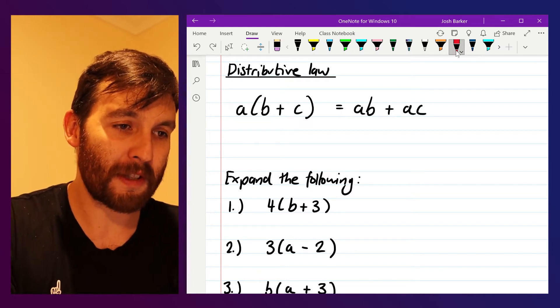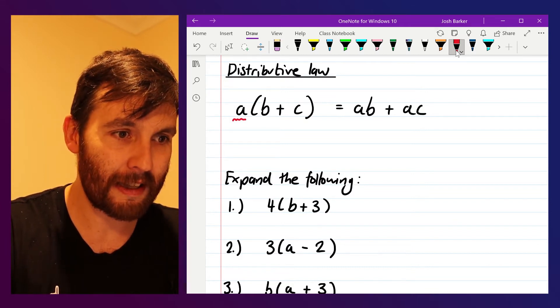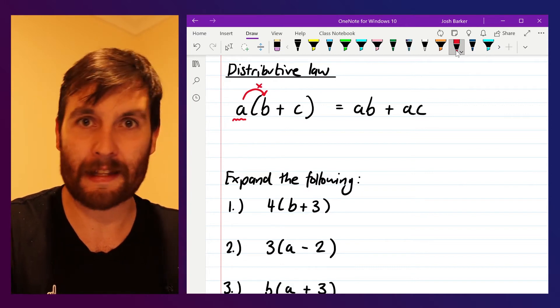What we do for these ones is if we want to expand the bracket, we take whatever we've got on the outside, in this case a, and we want to multiply it by everything that's on the inside of the bracket.